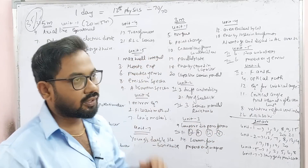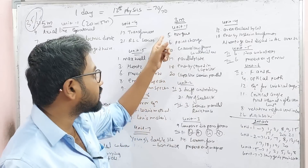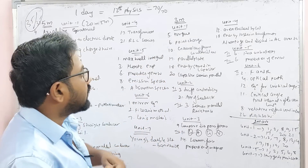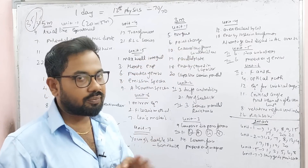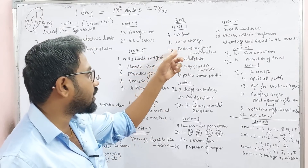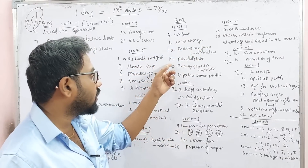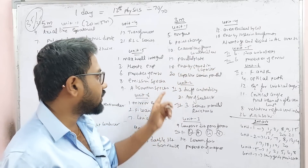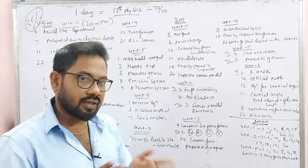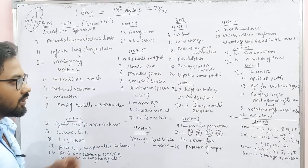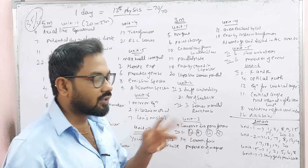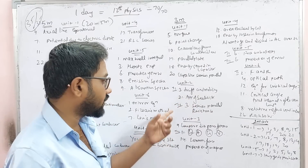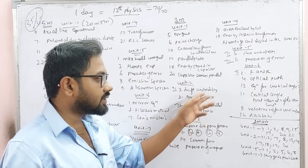Unit 1: uniform electric field. Roman numeral 3 is 6th — point charge, electrostatic potential to point charge, 10th — Gauss's law from Coulomb's law. Parallel plate capacitor equation, energy stored in capacitor, 20th — capacitor series and parallel. Unit 2: Drift Velocity, Mobility, 21st — application of Seebeck effect, Roman numeral 3, series and parallel resistance.